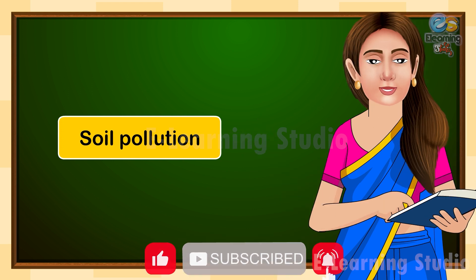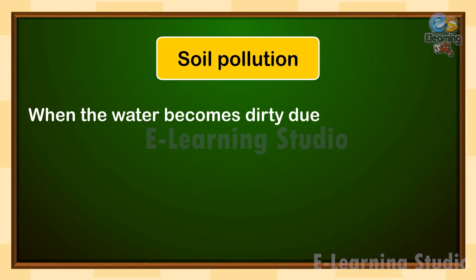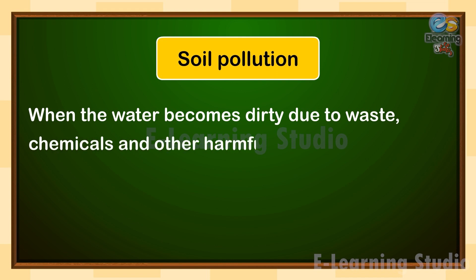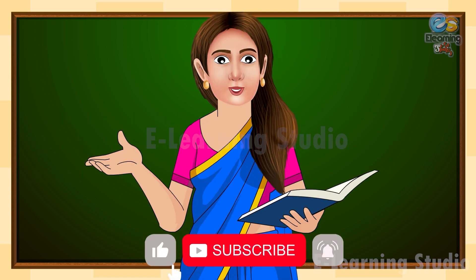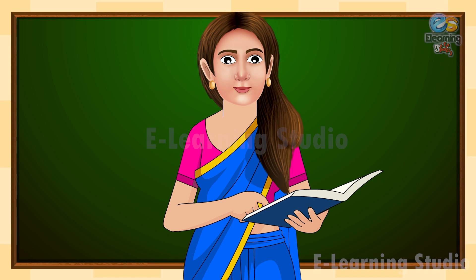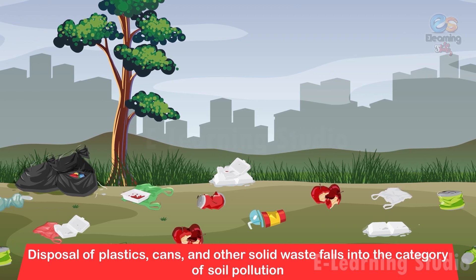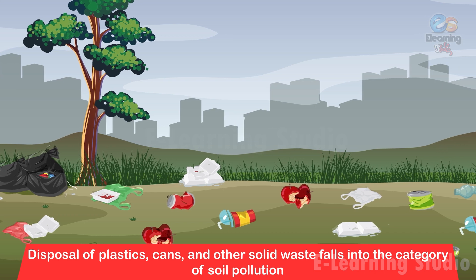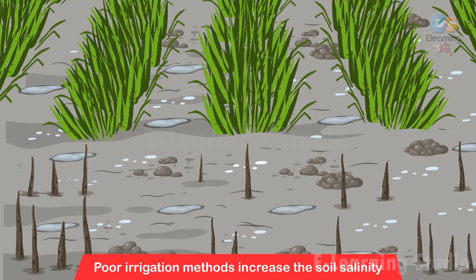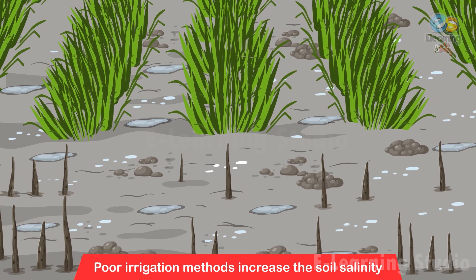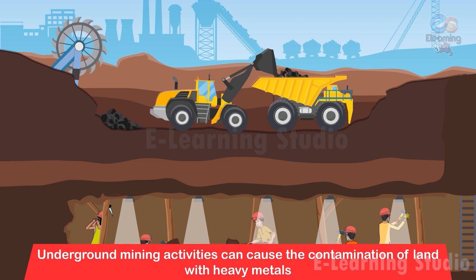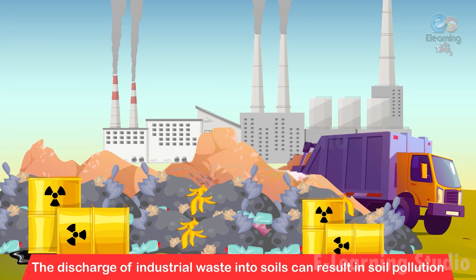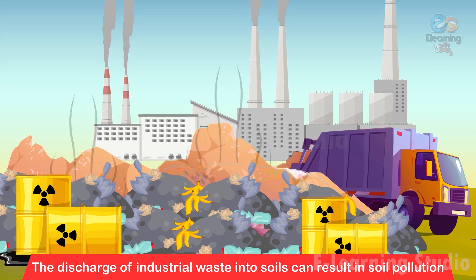Soil Pollution: When the soil becomes dirty due to waste, chemicals and other harmful particles, it is known as soil pollution. Some major causes of soil pollution are: 1. Disposal of plastics, cans and other solid waste, 2. Poor irrigation methods increase the soil salinity, 3. Underground mining activities can cause the contamination of land with heavy metals, 4. The discharge of industrial waste into soils can result in soil pollution.